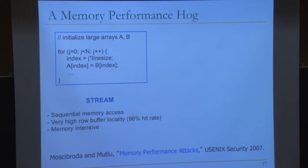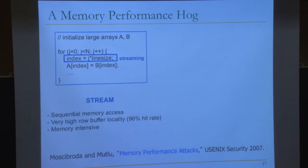The stream workload is a streaming application — addresses stream sequentially through memory, giving very high row buffer locality: 96% hit rate. It's memory intensive because every access is a cache miss. We also studied a random access workload, which is exactly the same except indices are determined randomly. The only difference between the two workloads is the order of access, resulting in random memory access and very low row buffer locality.